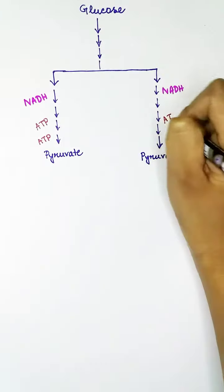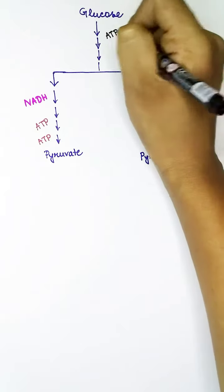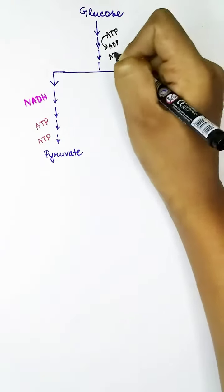But in the first phase of glycolysis, two ATPs were also consumed, so net ATP gain is two.